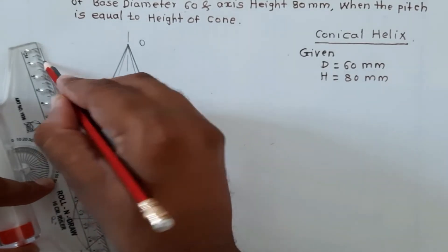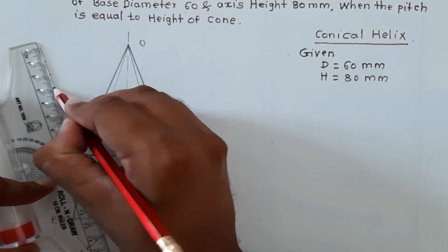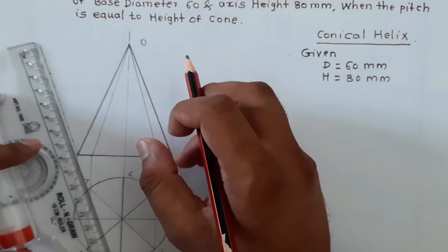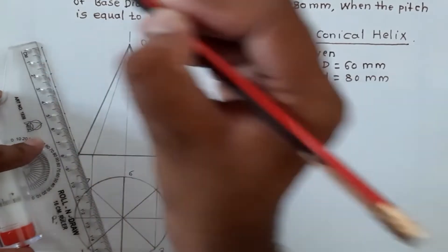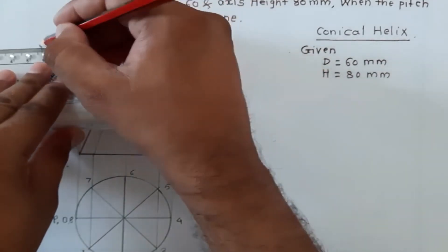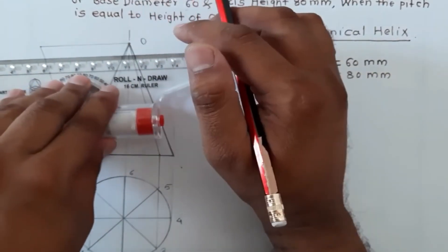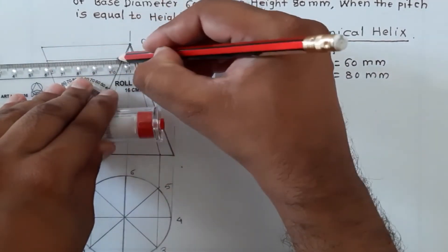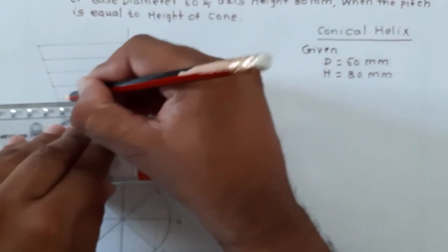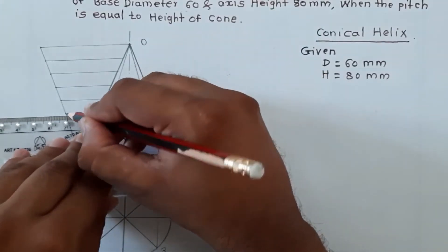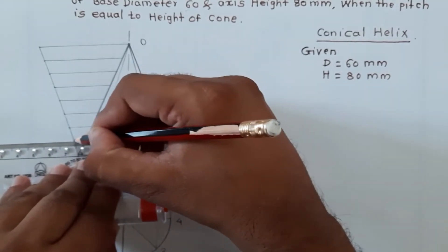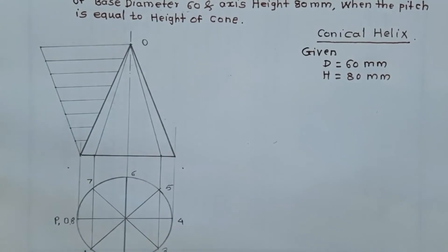Now we have to join the last point with the apex. The division points are numbered: one, two, three, four, five, six, seven, eight. All projections have been transferred.